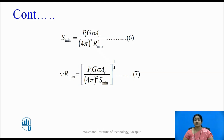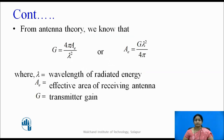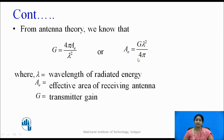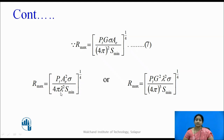From antenna theory, the gain G is given by G = 4π × Ae / λ², where λ depends on the radar frequency, or equivalently the effective area Ae = G × λ² / (4π). By substituting either G or Ae into equation 7, we obtain alternative forms of R_max — one in terms of effective area Ae and one in terms of antenna gain G. These are the alternative forms of the radar range equation.